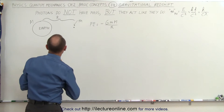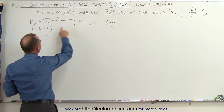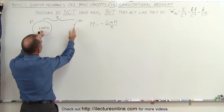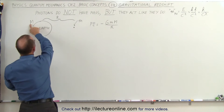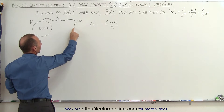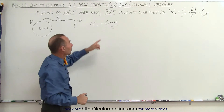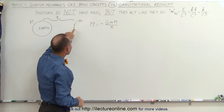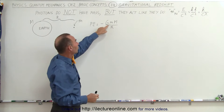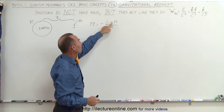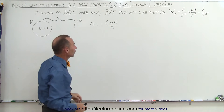Imagine there is an object at some distance away from the center of the earth. That distance to the center of the earth is R, big M is the mass of the earth, and small m is the mass of that object. The potential energy of this object is equal to minus the universal gravitational constant times the mass of the object times the mass of the earth, divided by the distance R from the center of the earth.